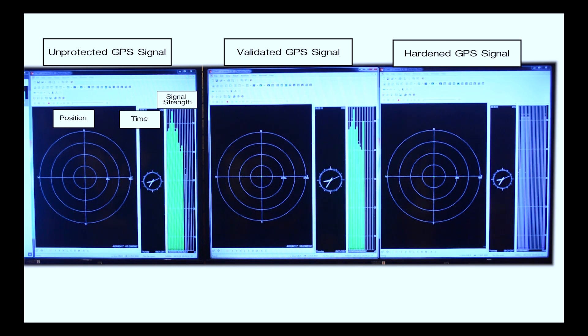Now let's look at what happens with our unprotected receiver, our receiver connected to the validated output of the blue sky GPS firewall, and our GPS receiver connected to the hardened output. What happens when a spoofing event occurs? This spoofing event is actually going to be a position movement, and so we're looking at the position graph of each of the three GPS receivers. I think we're starting to see some position movement happen now. So let's wait and see what the three systems do.